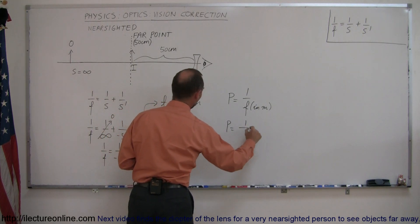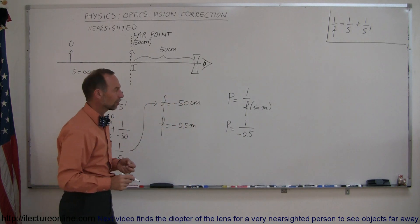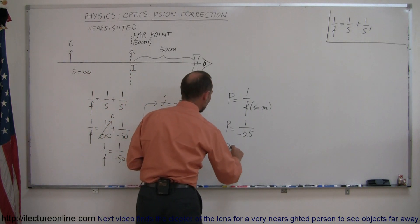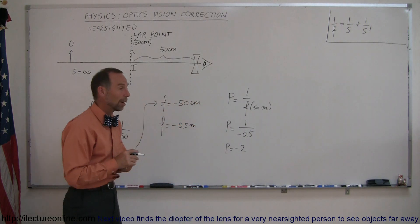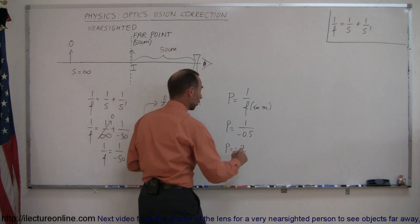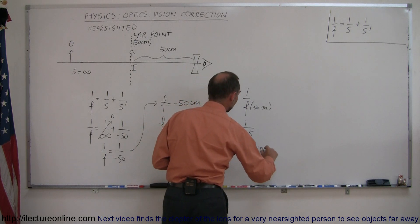If we plug that back into this equation right here, then the power of the lens is equal to 1 over minus 0.5. Of course, 1 divided by minus 0.5 means that P is equal to minus 2, and the units for power, 1 over the focal length, is called diopters. So minus 2 diopters.